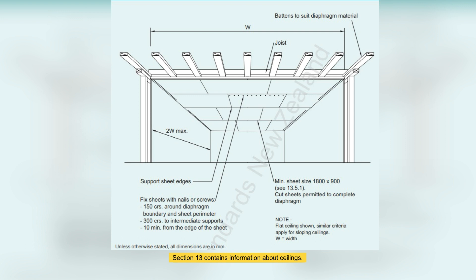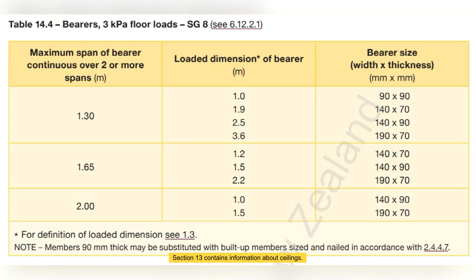Section 13 contains information about ceilings. Section 14 shall be used for the design of buildings with 3 kPa floor loading. This section details the increased requirements for the design of structural components.